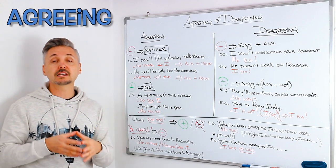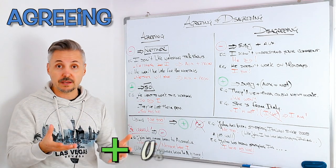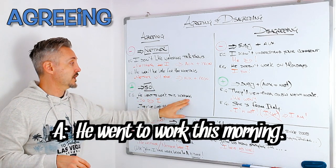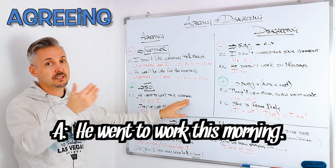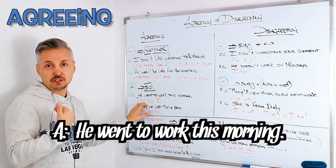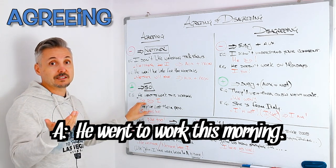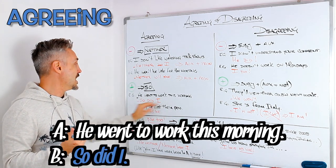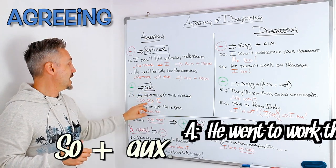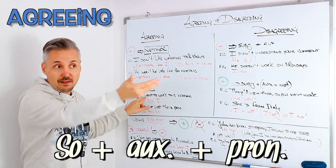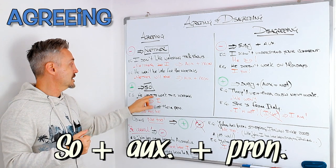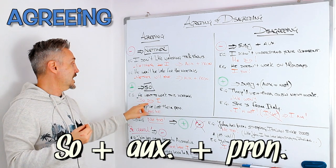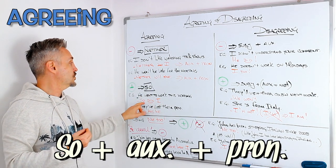What if the sentence is positive and you want to agree? You use 'so.' For example: 'He went to work this morning.' You can say 'me too' or 'so did I.' The formula is: so + the auxiliary of the other person's statement. 'Went' is the past of 'to go', so the auxiliary is 'did' — 'so did I.'